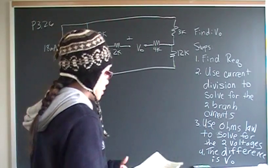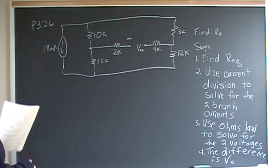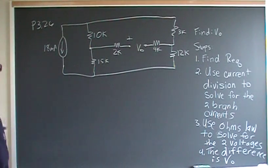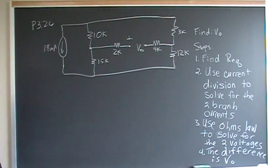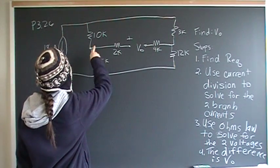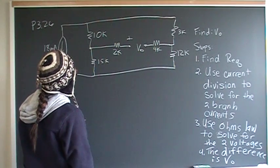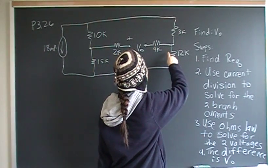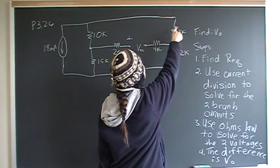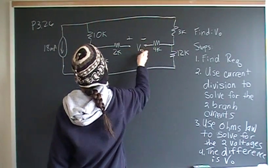Hey, so this is problem number 26 from chapter 3 on voltage division and current division. In this problem, we have an 18 milliamp independent current source connected in parallel with a 15 kilo ohm resistor, which is connected in series with a 10 kilo ohm resistor, and we have a 2 kilo ohm resistor there. Over here we have a 4 kilo ohm resistor, a 3 kilo ohm resistor, and a 12K there. And we want to find this voltage.